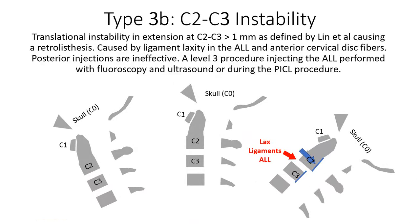On type 3B, it's the opposite — C2 slides backwards on C3. The ligaments here, the anterior longitudinal ligaments, are going to be in the front.